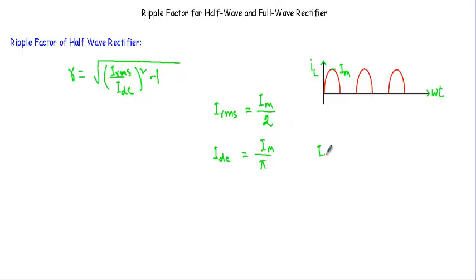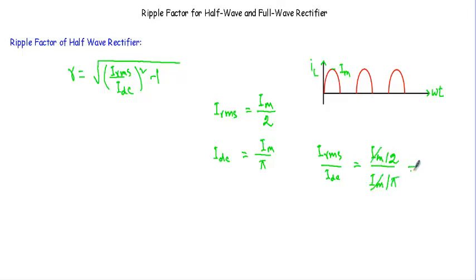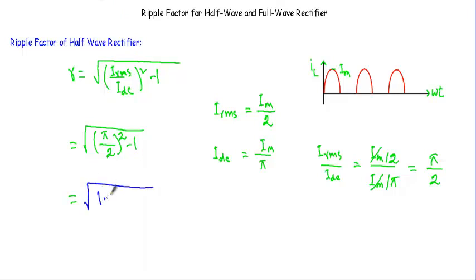Now take the ratio of IRMS and IDC. IRMS divided by IDC will be equal to (IM/2) divided by (IM/π). The IM terms cancel, so I get π divided by 2. Now putting the value of IRMS/IDC — that is π/2 — into the formula: (π/2) whole square minus 1.